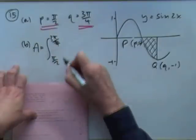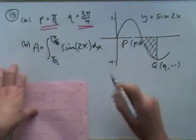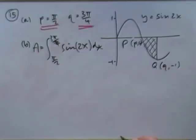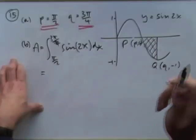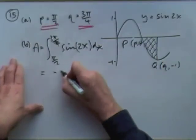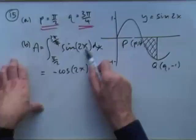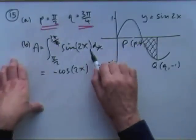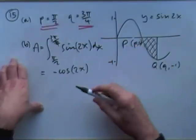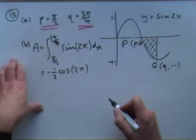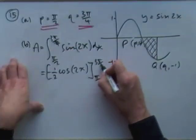Even though I know the answer is a half: integrating sin 2x, which is a function of a function. Sine integrates back to negative cosine. It was sin 2x not sin x, so there's a linear inner function — if differentiating I'd multiply by 2; integrating is opposite so I divide by 2. That gives negative a half cos 2x, evaluated from π upon 2 to 3π upon 4.